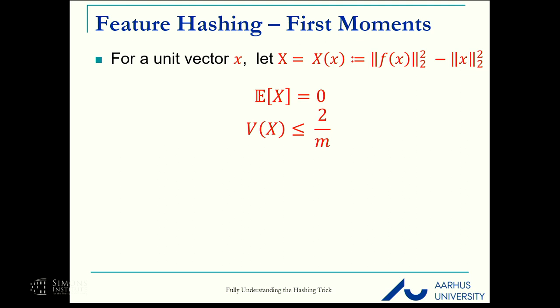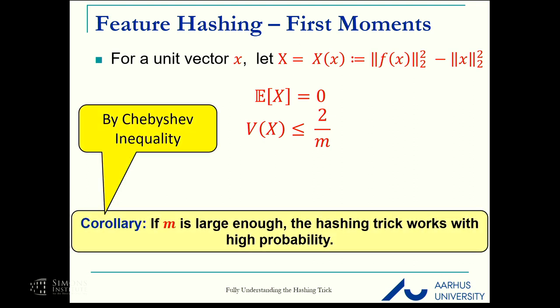Just a warm up. Let's take a unit vector x and let the random variable capital X be the square norm of the sketch minus the square norm of the original vector. The expected value of X is zero and the variance is at most 2 over m.